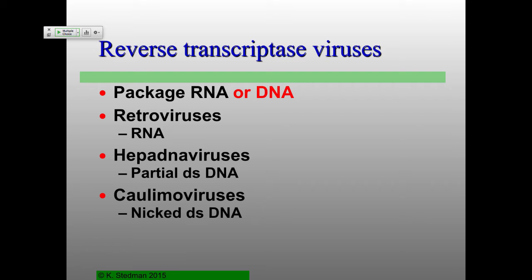So the HEPA DNA viruses, in fact, package partially double-stranded DNA with a little bit of RNA on it. So this is that exception I talked about — capsids only package DNA or RNA. The HEPA DNA viruses — hepatitis B is the best studied of these — in fact package both RNA and DNA. It's actually an RNA primer left over from replication that's still packaged as part of that.